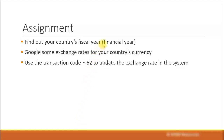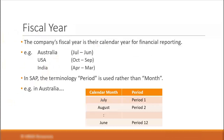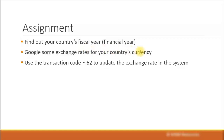For your assignment, find out your country's fiscal year. If you are not in a country listed in my examples, just Google your country's name and type in 'fiscal year' and you should get information on from which month to which month your fiscal year runs. Then Google some exchange rates for your country's currency — for example, Australian dollars to US dollars — and use the transaction code F-62 to update the exchange rate in the system.